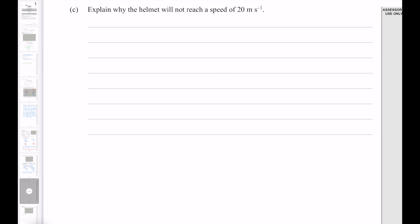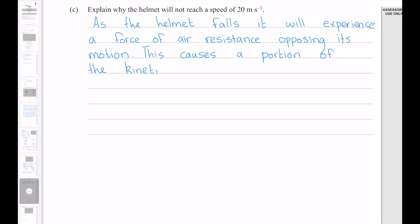Explain why the helmet will not reach a speed of 20 meters per second. The reason for this is air resistance. To perform the previous question, we had to assume that there was none, but in reality, there will be some air resistance that will slow down the helmet. As the helmet falls, it will experience a force of air resistance opposing its motion. This causes a portion of the kinetic energy to be lost as heat. The kinetic energy at the bottom will therefore be less, and so too will its speed.